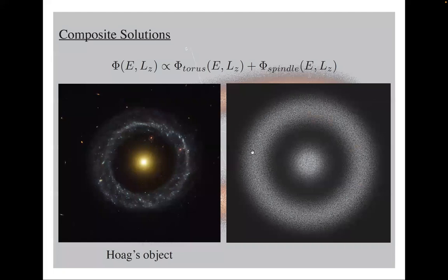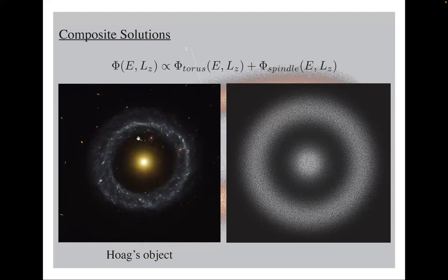We can get other types of solutions: toroidal solutions or spindle-like solutions, and in fact one can combine them. You can make an ansatz combining a torus with a spindle. To the right is a numerical solution where the central part is a spindle — not just a ball. This object resembles Hoag's object from astrophysics, where the central object appears to be more of a spindle nature than ball-shaped. So this model seems to be quite a good model for Hoag's object, though convergence is very sensitive.